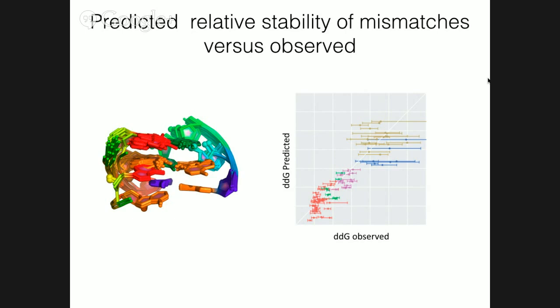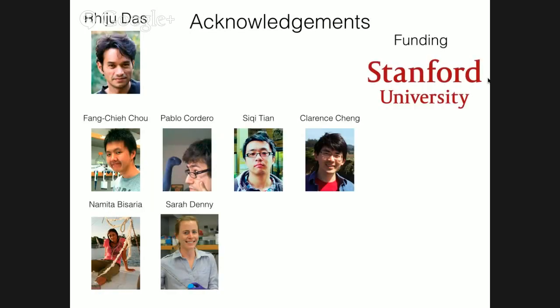That was actually the end — I just wanted to show you a preview of this newer stuff. I'd like to thank Riju, who has been critical for developing the motif assembly idea, and Fong, who was helping me at the beginning with computational work. Thanks to Pablo, Cici, and Clarence for helping me process the SHAPE chemical mapping data, and Namita from the Herschlag group and Sarah from Will Greenleaf's group, who I'm collaborating with on the second part. And Caleb, who gave me the Stepwise Monte Carlo — he first developed it and then taught me how to do it, which was awesome.